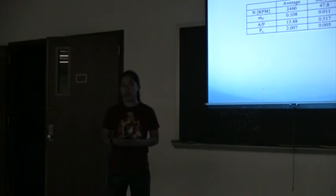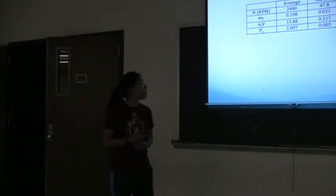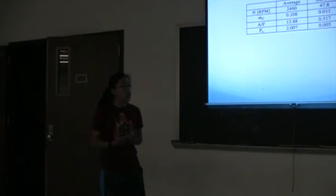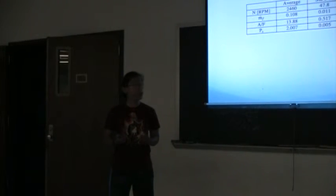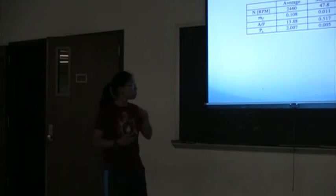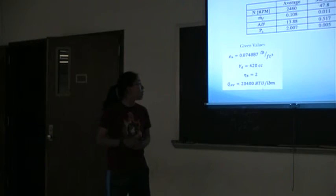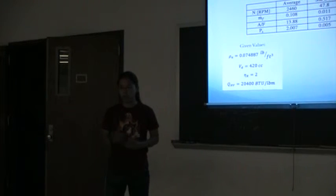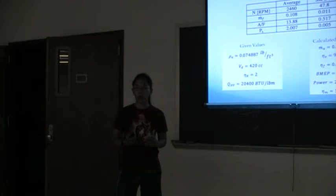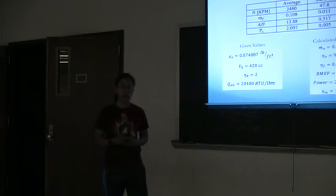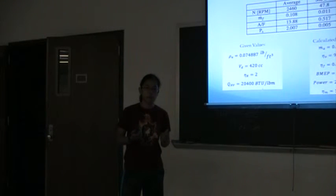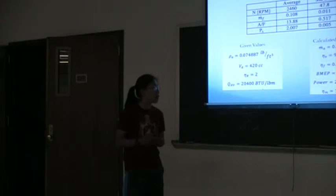Using constant speed test number three, I achieved this set of data. You can see our average values and our standard deviation. N is the number of RPMs. M dot is the mass flow rate of fuel. A/F is the air to fuel ratio. And PB is your barometric pressure in psi. Then using given values from the manual, I was able to calculate the values of our mass flow rate of the air, which is 0.0248. This number did not have any units attached to it, so I'm not sure what units are. My best guess would be probably pounds per minute.